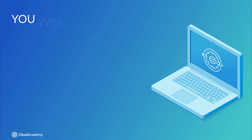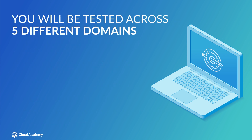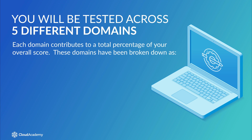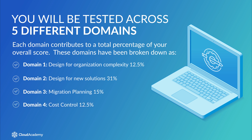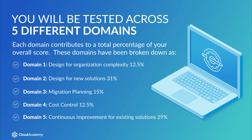As a means of demonstrating this knowledge, you will be tested across 5 different domains, with each domain contributing to a total percentage of your overall score. These domains are: Domain 1, design for organizational complexity, which is 12.5%. Domain 2, design for new solutions, which is 31%. Domain 3, migration planning, which is 15%. Domain 4, cost control, which is 12.5%. And Domain 5, continuous improvement for existing solutions, which is 29%.